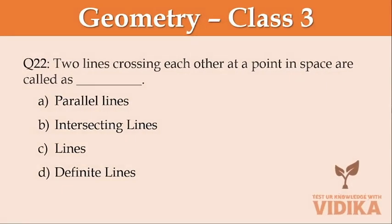Two lines crossing each other at a point in space are called a dash. Option A parallel lines, option B intersecting lines, option C lines, option D definite lines.